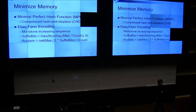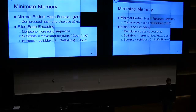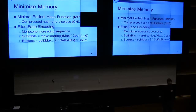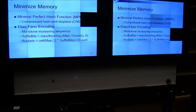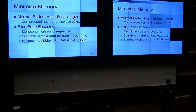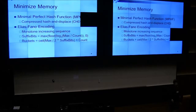Then there is Elias-Fano coding, invented around 1970 — I reinvented it because I didn't find it, which would have saved me a lot of time. It's for a sorted list of numbers. Given your list of numbers, it can remove log base 2 of n minus 2 bits from each number you're trying to store — that's two bits less than optimal, so slightly less than optimal.